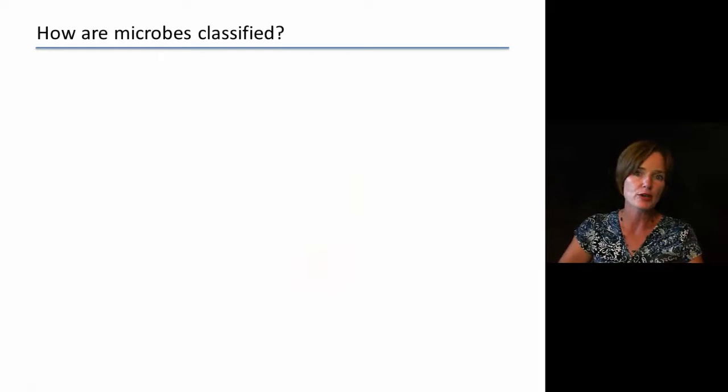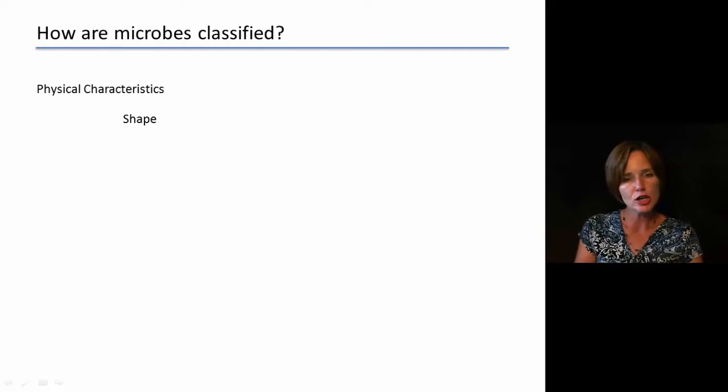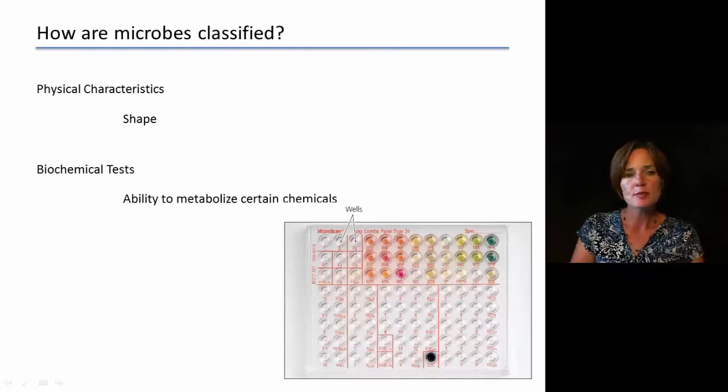So if we just look at how microbes are going to be classified, we can classify them based on some physical characteristics, such as shape. That's kind of a starting point. It doesn't allow us to divide them up into too many individual groupings.